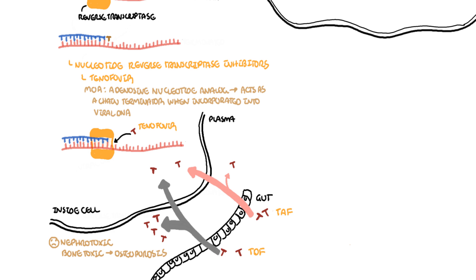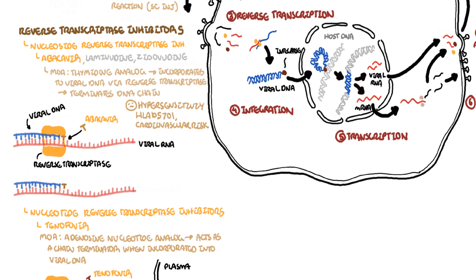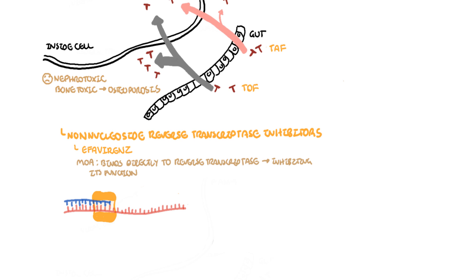Those are the two main types of reverse transcriptase inhibitors, the nucleotide and nucleoside reverse transcriptase inhibitors. However, there is another version, the non-nucleoside reverse transcriptase inhibitors. An example of this is efavirenz. The mechanism of action of efavirenz is that it binds directly to reverse transcriptase inhibiting its function rather than being an analogue of some nucleotide nucleoside.